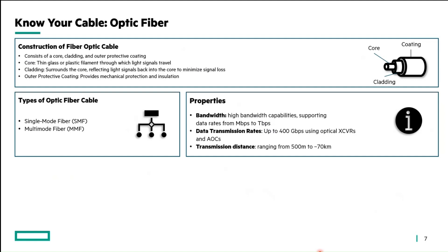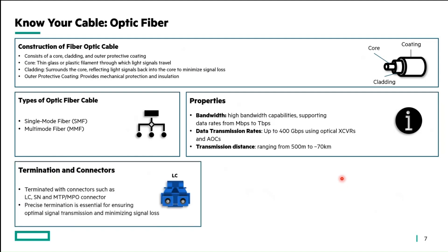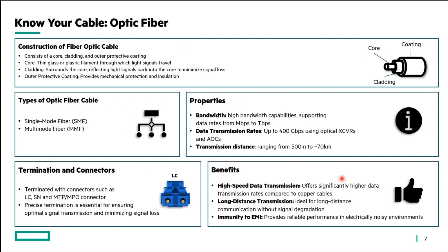The transmission distance for fiber optic ranges from approximately 500 meters to 70 kilometers. Optic fibers are terminated using multiple types of connectors: LC connectors, SN connectors, or MTP/MPO connectors. Benefits include high-speed data transmission — significantly higher than copper cables — longer transmission distances, and immunity to electromagnetic interference.